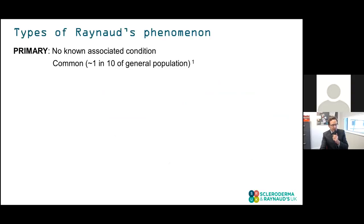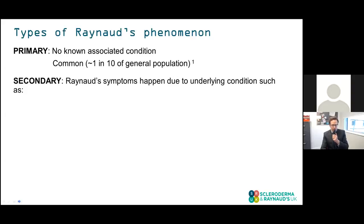What he's almost certainly describing is a case of primary Raynaud's phenomenon — where there's no associated underlying health problem driving the abnormal blood supply to the fingers. This is extraordinarily common, affecting about one in ten of the general population. If you restrict that to females, the problem may be as high as one in six or one in seven. Secondary Raynaud's occurs when the symptoms happen because of an underlying health problem.